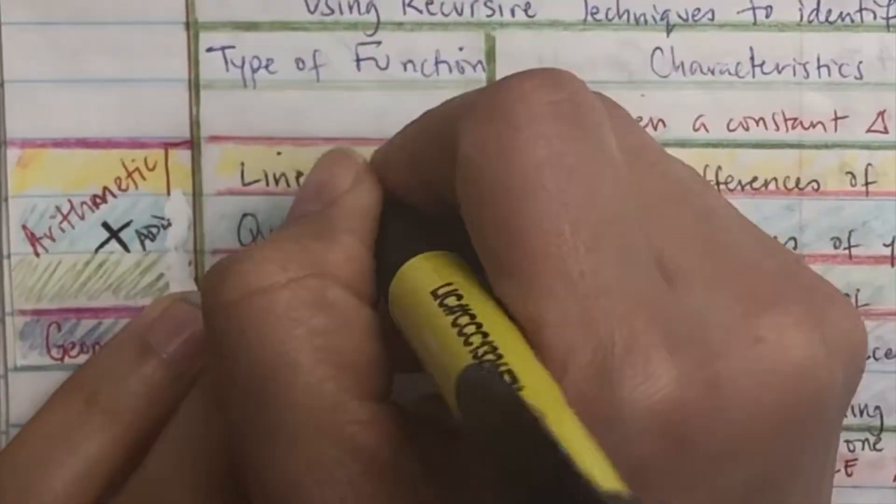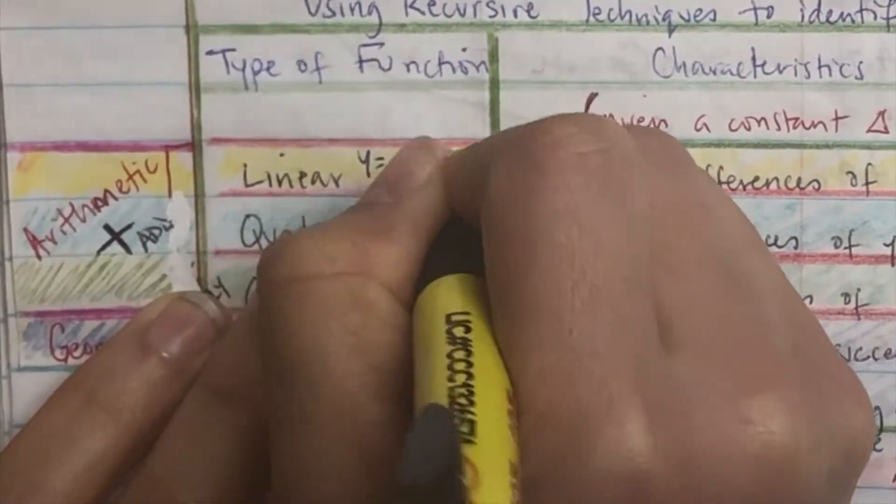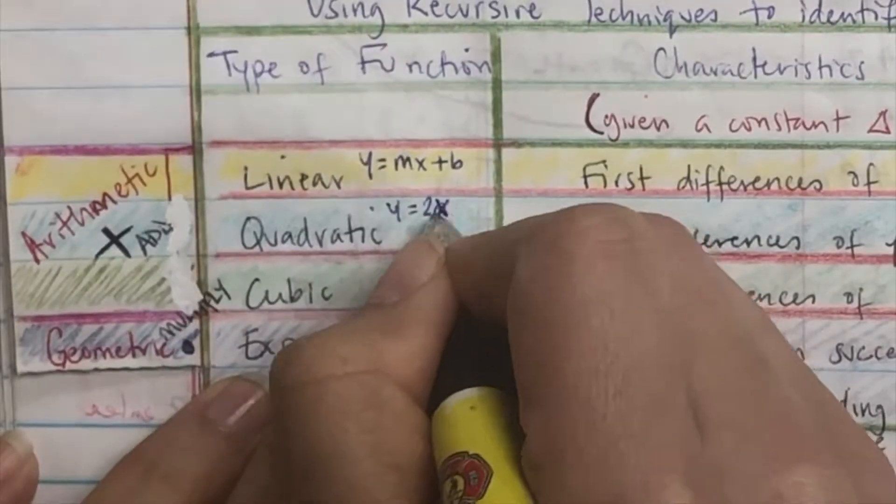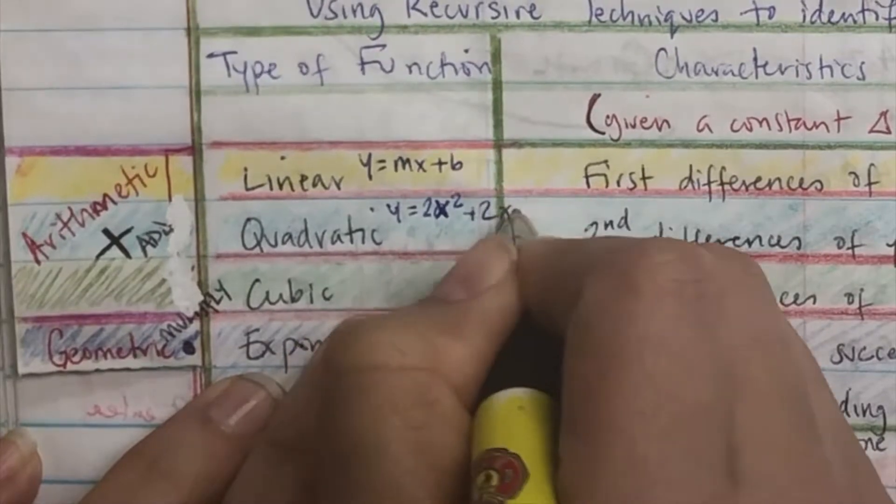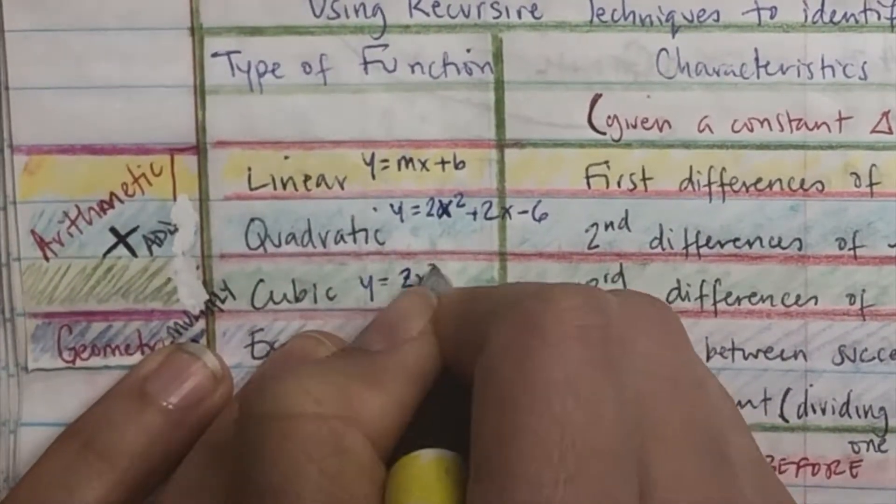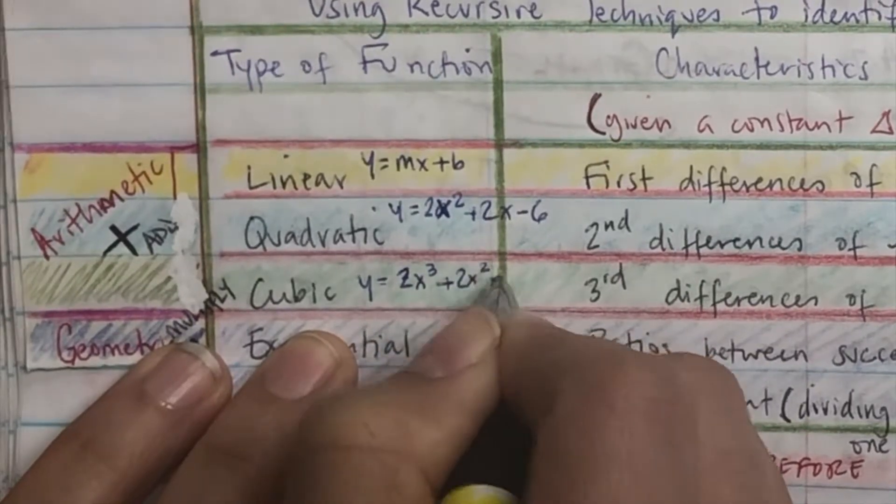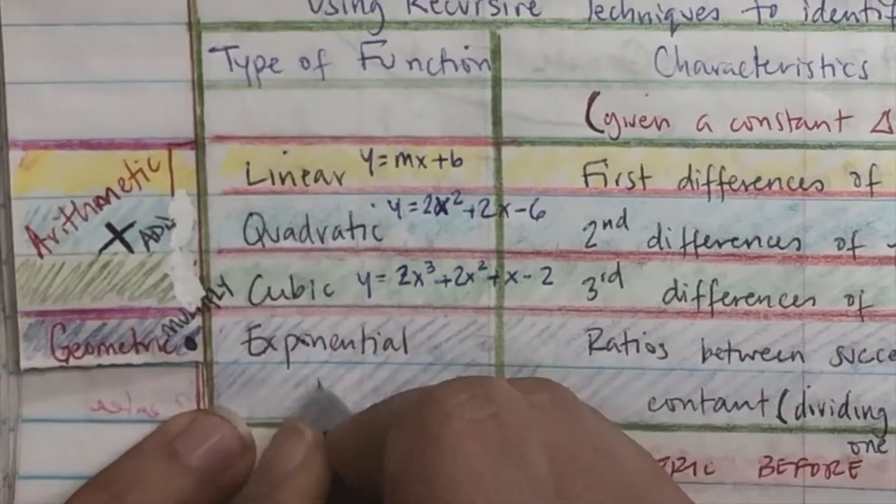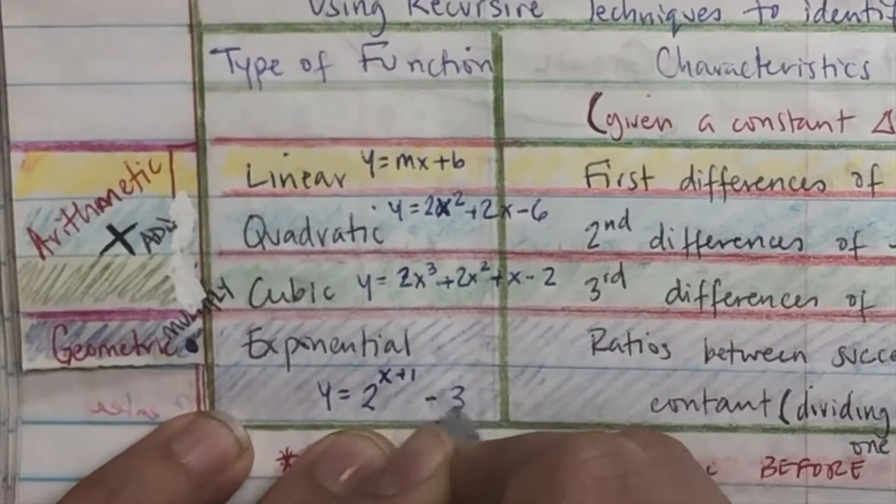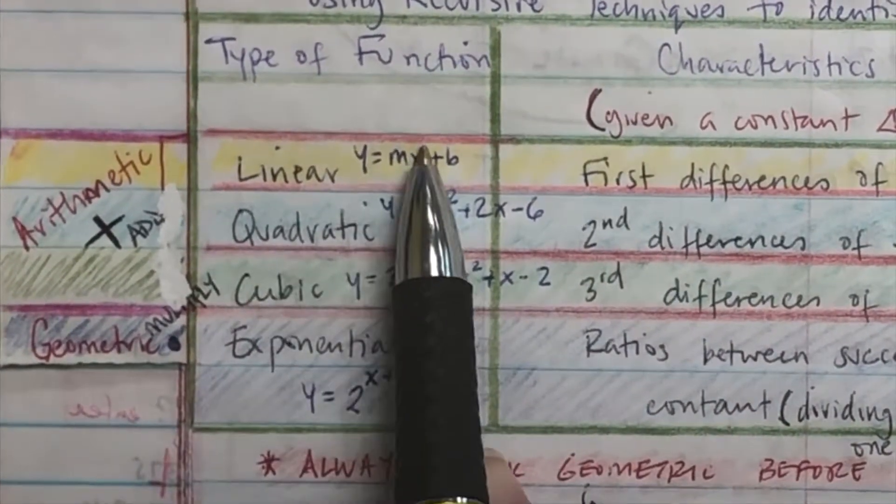Now, you have linear, quadratic, cubic, and exponential. Linear is y equals mx plus b. Quadratic has a square term in it, for example, like 2x squared. Cubic has a cubed term in it to the power of 3, for example, 2x cubed. And exponential is raised to the power of an x. So 2 raised to the x plus 1.